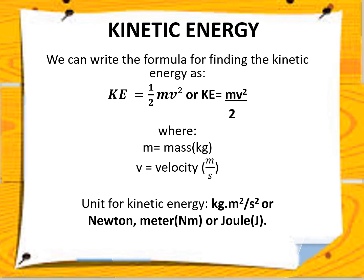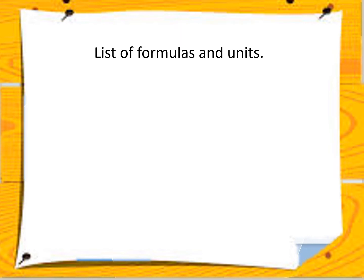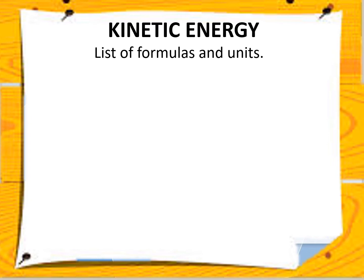There is a formula for finding the kinetic energy. We are going to use the formula KE equals one half mv squared, or we could rewrite it as KE equals mv squared divided by 2. Here m is the mass with unit kilograms, and v is the velocity with unit meters per second. The unit for kinetic energy is kilogram meter squared per second squared, or newton meter, or joules.